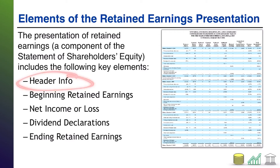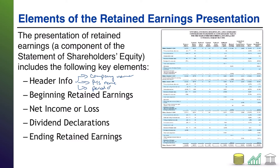There's going to be a header for the statement of shareholders' equity. That header will have, like other headers, the company name. It will have the financial statement name, which will typically be 'Statement of Shareholders' Equity.' And then it will have the period of time covered. Most financial statements cover a period of time — the balance sheet being the exception, that being a point in time. But in this case, we're back to a period of time, and this presentation will tell us what happened to retained earnings over that period.